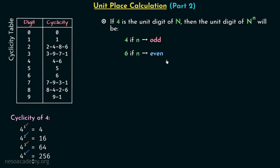We will see one example to understand this better. Let's say we have the number 694 raised to the power 217, and we are required to find out the digit at unit place. We can see that 694 has four at its unit place, so we can use this rule. Following the rule, when n — which is 217 in this case — is odd, the digit at unit place is going to be four.